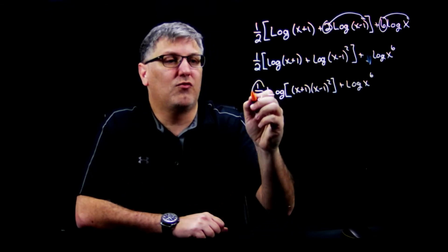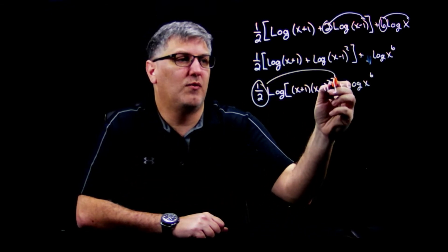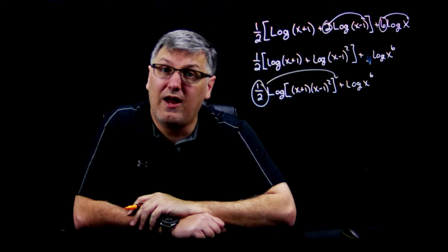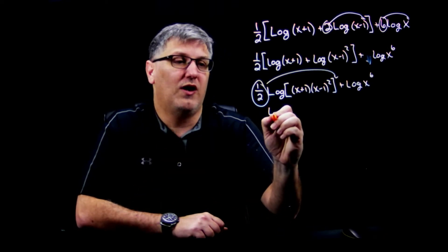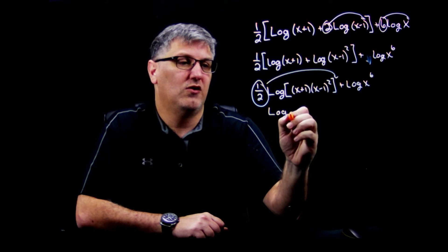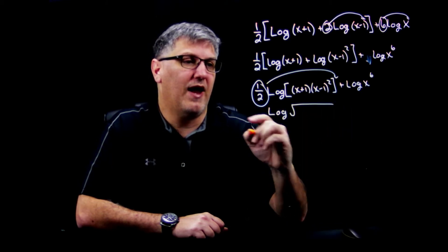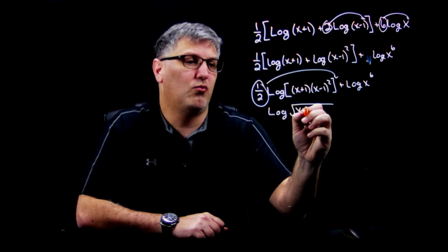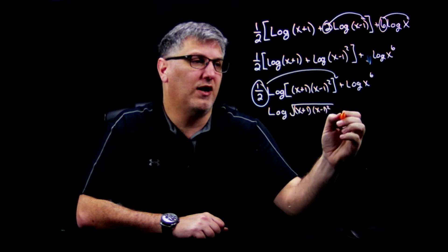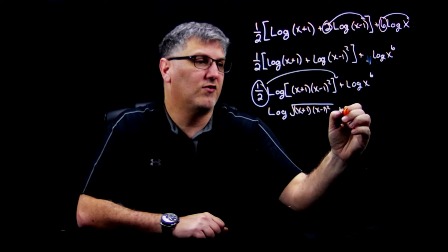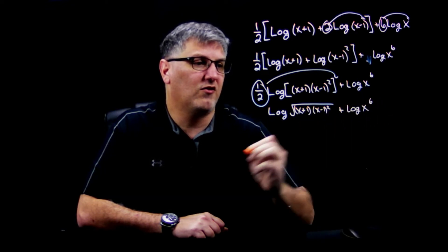All right, now we know that this right here is an exponent, so that's going to come up here. And we also know 1/2 is a square root, so I'm just going to write this as a square root. So I have log to the square root, that's this 1/2, of (x+1) times (x-1) squared plus log x to the 6th.